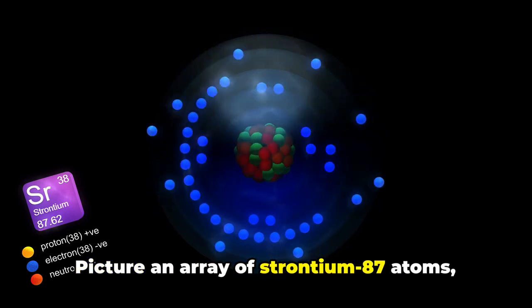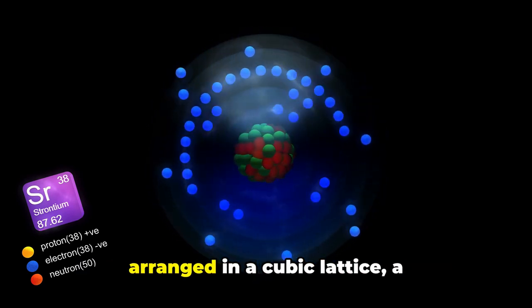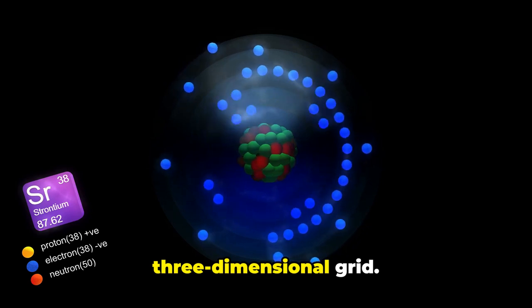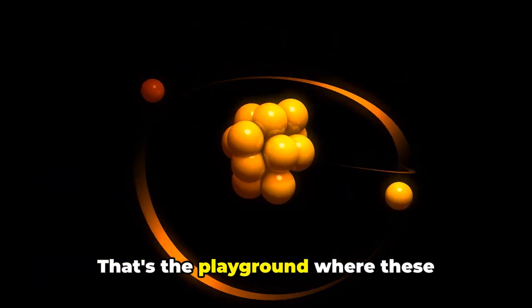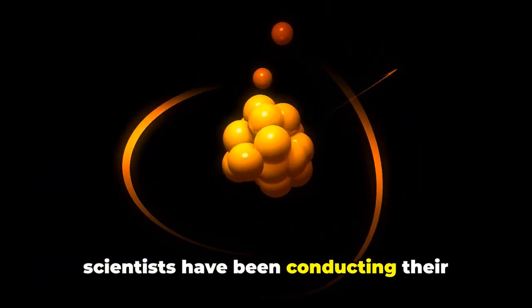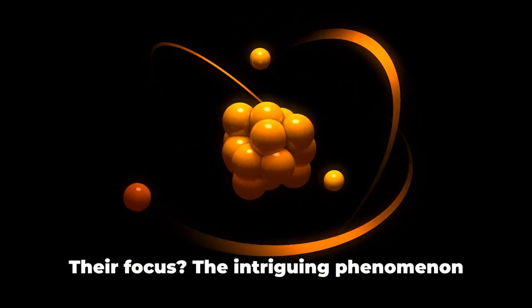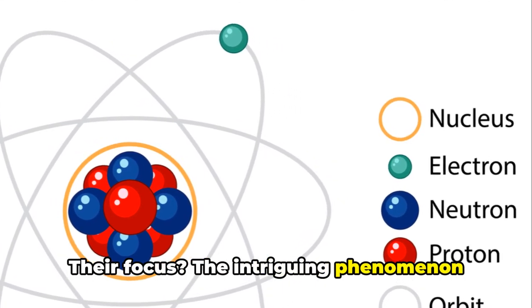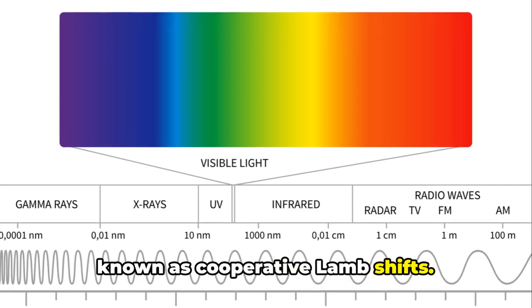Picture an array of strontium-87 atoms arranged in a cubic lattice, a three-dimensional grid. That's the playground where these scientists have been conducting their groundbreaking research. Their focus? The intriguing phenomenon known as cooperative Lamb shifts.